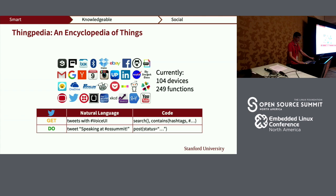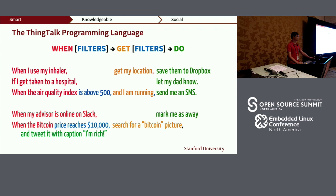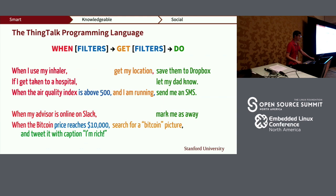These functions can be combined using the ThingTalk programming language — our high-level programming language with one simple construct called 'when-get-do' with filters. It is designed to map exactly what users want to do. For example, you can say: when my advisor is online on Slack, automatically set me to away so I don't get notified.